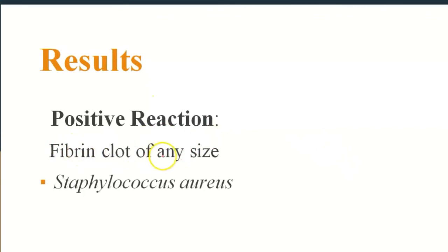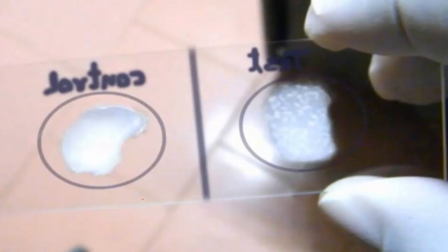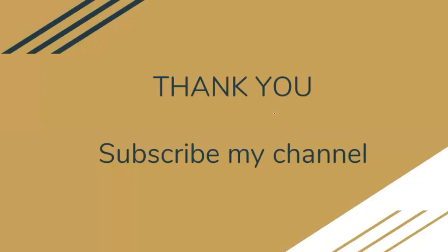Results: if you see a fibrin clot of any size, the reaction is positive and the bacterial isolate is Staphylococcus aureus. If you see no clot, it is another species of Staphylococcus. On actual glass slides, one slide appears completely smooth while the other shows visible clumps, indicating a positive coagulase test. A link to view the slides is available in the description box. Thank you for watching, and don't forget to subscribe.